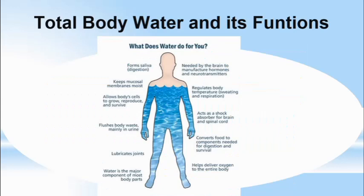Water performs many functions in the body. For example, it is a part of saliva, needed by the brain to manufacture hormones and neurotransmitters, keeps mucosal membranes moist, regulates body temperature by sweating and respiration, allows body cells to grow, reproduce and survive, acts as a shock absorber for the brain and spinal cord, flushes body waste mainly in urine, converts food for digestion, lubricates joints, and helps deliver oxygen throughout the body.